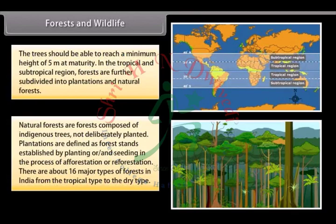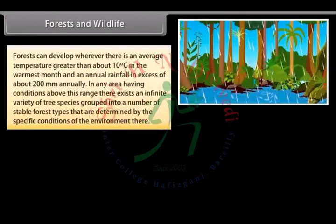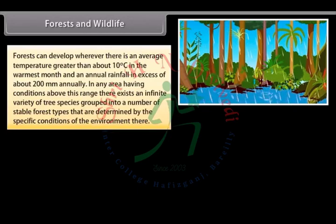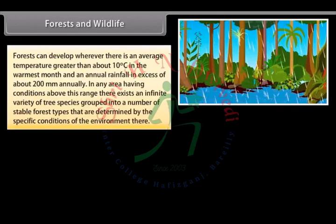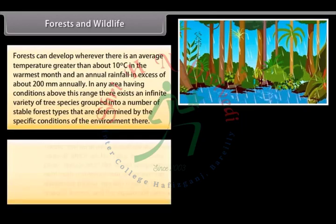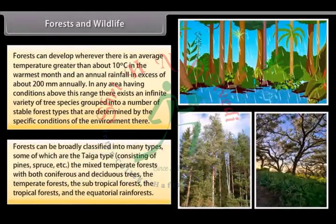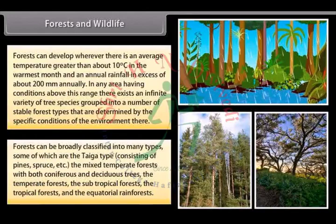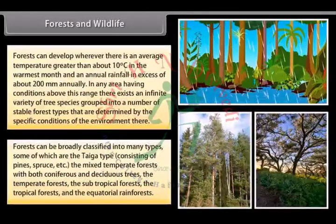There are about 16 major types of forests in India, from the tropical type to the dry type. Forests can develop wherever there is an average temperature greater than about 10 degrees Celsius in the warmest month and annual rainfall in excess of about 200 mm. Forest types include the taiga type consisting of pines and spruce, mixed temperate forests with both coniferous and deciduous trees, temperate forests, subtropical forests, tropical forests, and equatorial rain forests.